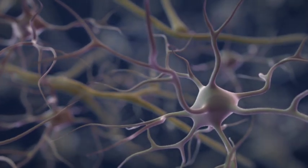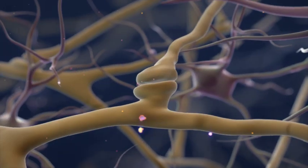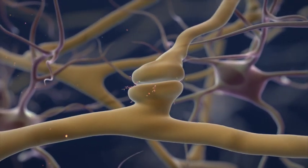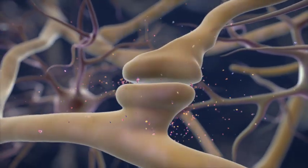Glial cells react to stimuli that threaten homeostasis in the central nervous system. Nerve damage causes intensive firing by sensory neurons, generating large amounts of neurotransmitters and associated molecules.